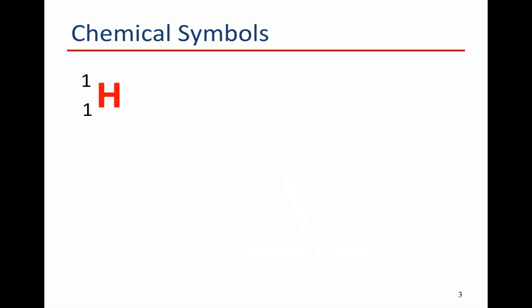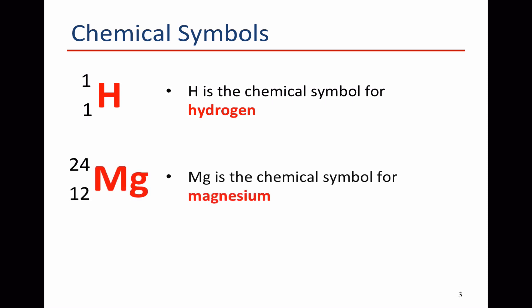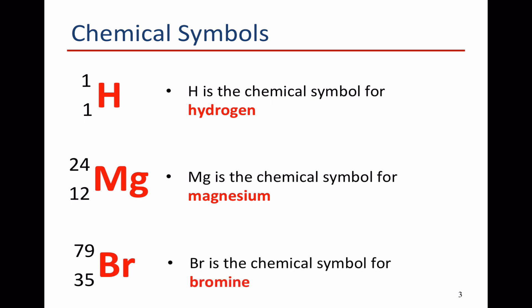We can look up on the periodic table the element that corresponds to this atomic symbol. So a large letter H, for example, would be hydrogen, Mg would be magnesium, and if we look up Br on the periodic table we would see that it's bromine.